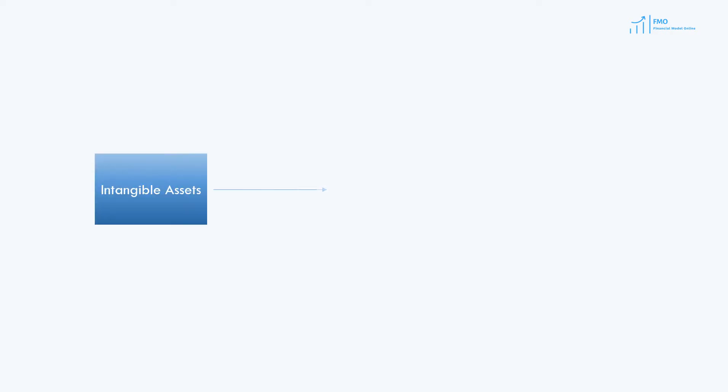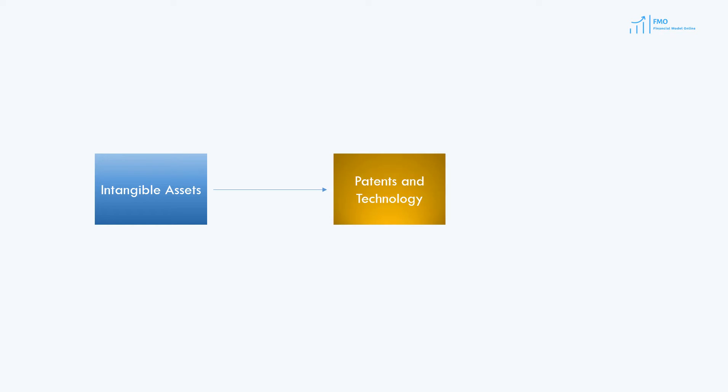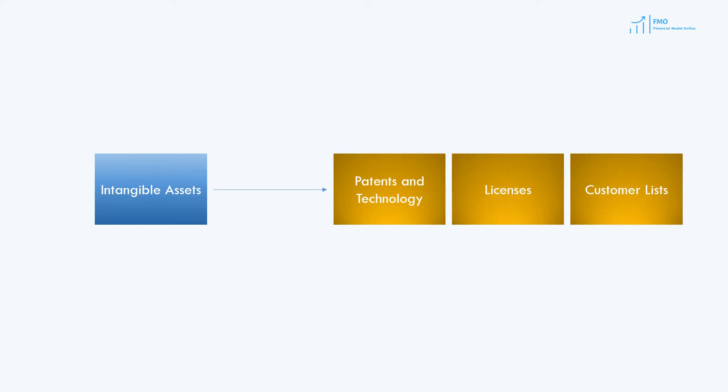So, what items are classified as intangible assets? Well, these are patents, technology, licenses, customer lists, and trademarks.